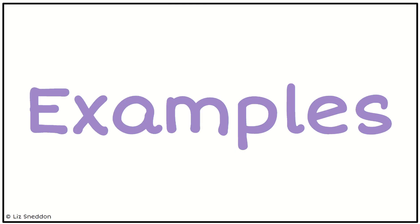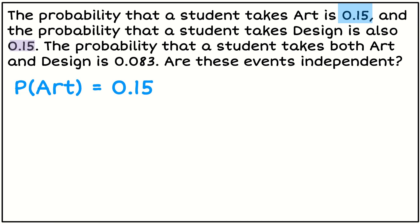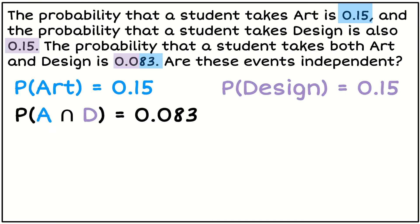So let's look at some examples. So we've got probability the student takes art is 0.15. The chance they take design is 0.15 and the chance they take both art and design, so that's our intersection, is 0.083. So that's my three key pieces of information. We've got the individual probabilities and we've got an intersection. So that tells us we need to use our second rule. So let's substitute the numbers in and see whether this rule is true or not. So therefore whether the events are independent or not.